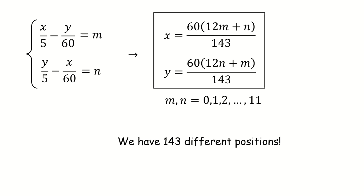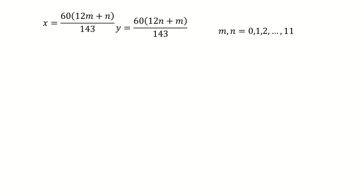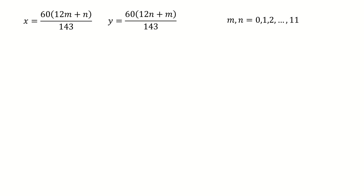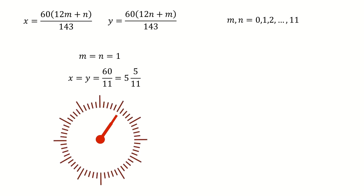Let's see some examples. We start by some examples that m and n are equal. Let's say m equals n equals 1. In this case, x equals y equals 5 and 5/11. That means a little bit more than 5 minutes after 1 o'clock. Of course, in this case, both hands are overlapping and if you swap them, nothing changes.